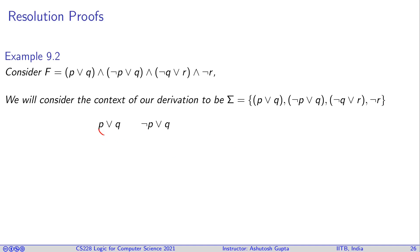So if we apply resolution between these two guys, then we will obtain Q, and then we pick another clause from our set not Q or R and then we derive R here. Now there is not R sitting here. I do the resolution with this guy and we get false.